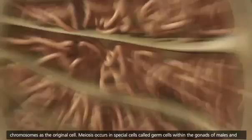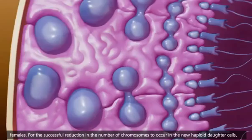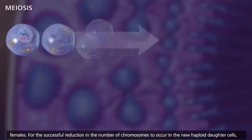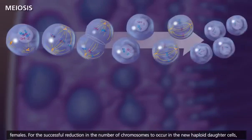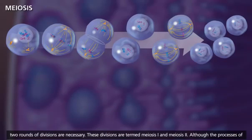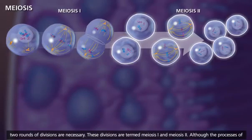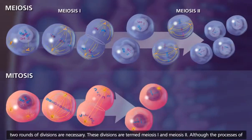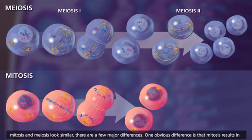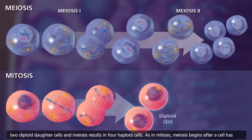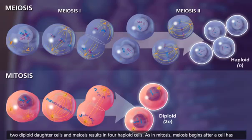Meiosis occurs in special cells called germ cells within the gonads of males and females. For the successful reduction in the number of chromosomes to occur in the new haploid daughter cells, two rounds of divisions are necessary, termed meiosis I and meiosis II. Although the processes of mitosis and meiosis look similar, there are a few major differences. One obvious difference is that mitosis results in two diploid daughter cells, and meiosis results in four haploid cells.